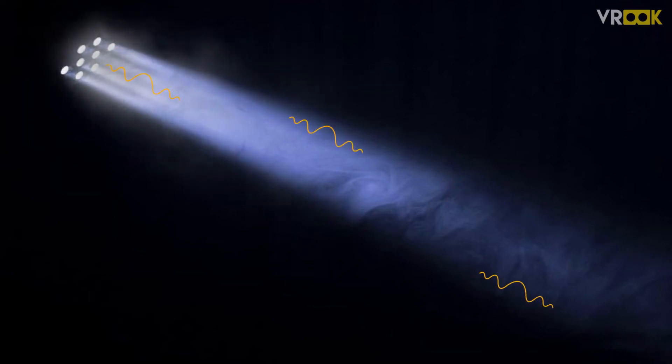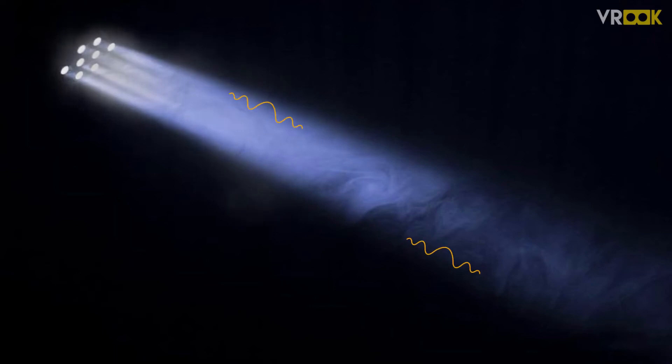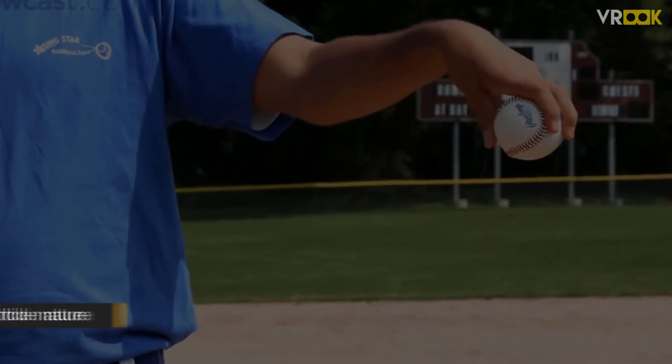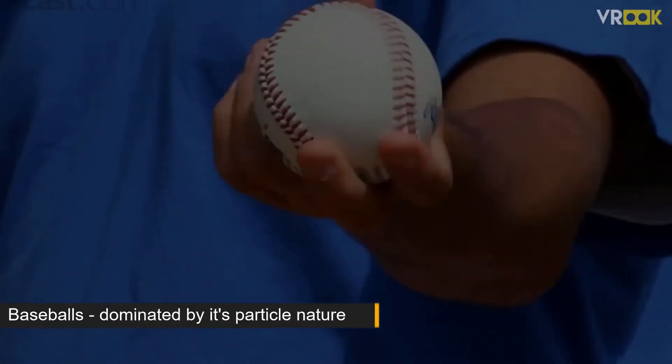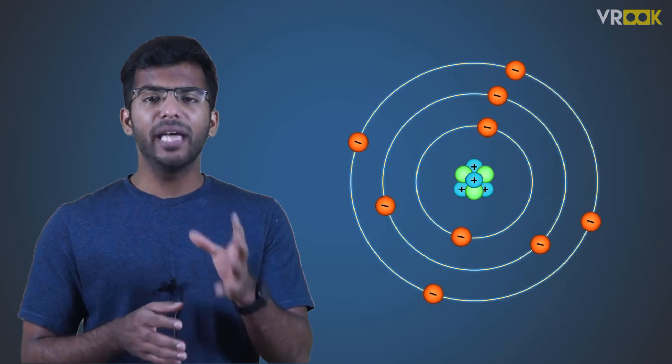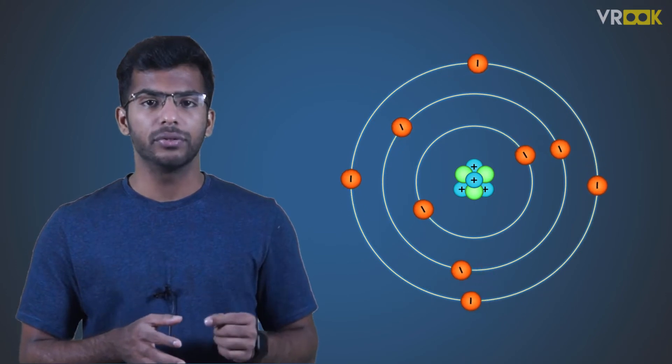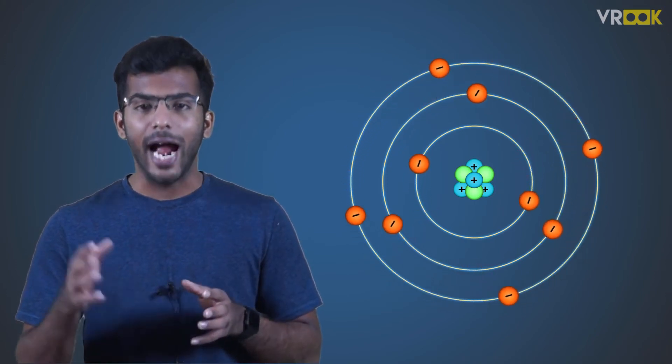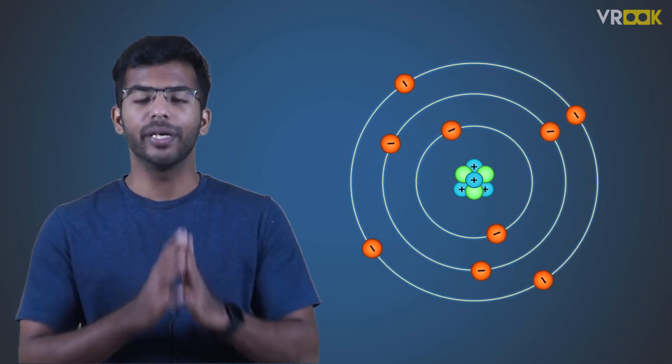Everything exhibits wave-particle duality, everything from electrons to baseballs. The behavior of relatively larger objects like baseball is dominated by their particle nature. To explain the behavior of tiny things like electrons, both the wave properties and particle properties have to be considered.